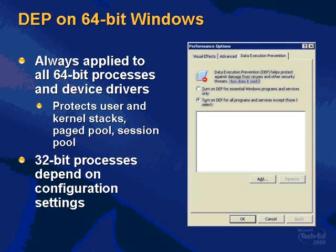This dialogue box was taken from a 64-bit system. You can see I've selected 'turn on DEP for all programs and services except those that I select.' What that dialogue box should really tell you is '32-bit programs,' because there's no way to turn it off for 64-bit programs. That's where Microsoft is saying moving forward, we are going to be secure here.